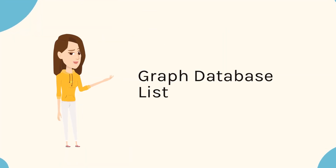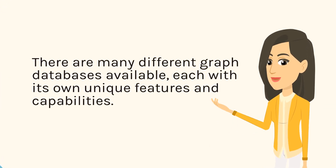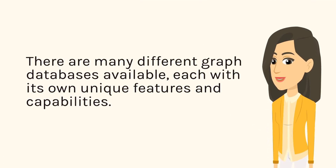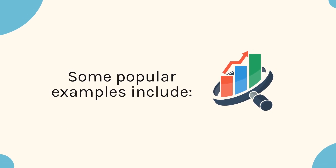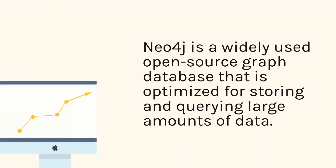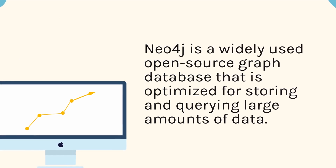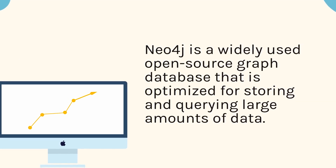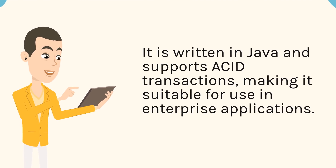Graph database list. There are many different graph databases available, each with its own unique features and capabilities. Some popular examples include Neo4j — a widely used open-source graph database that is optimized for storing and querying large amounts of data. It is written in Java and supports ACID transactions, making it suitable for use in enterprise applications.